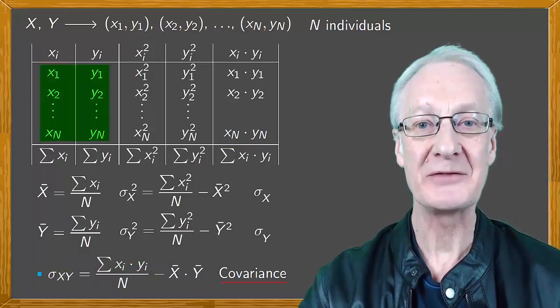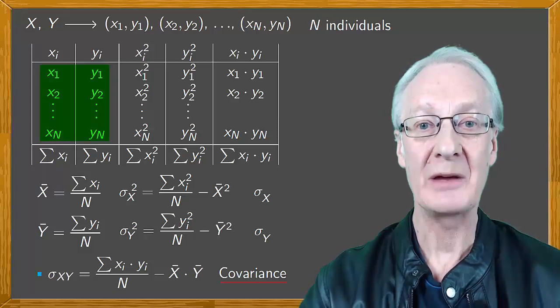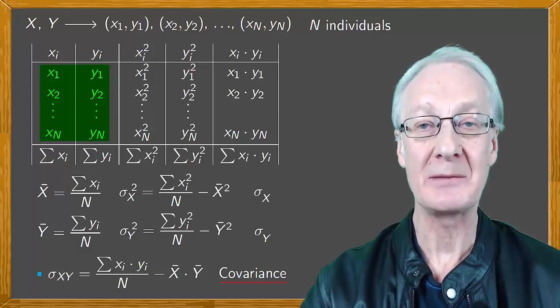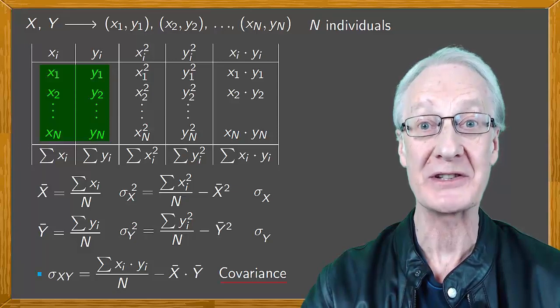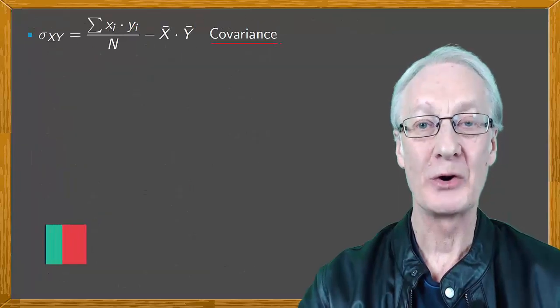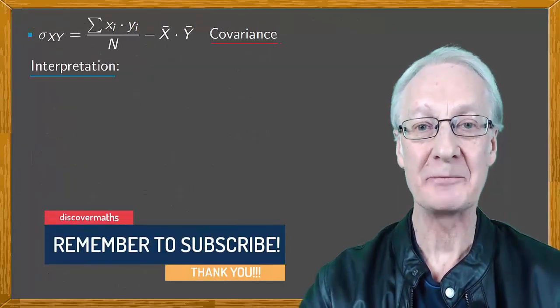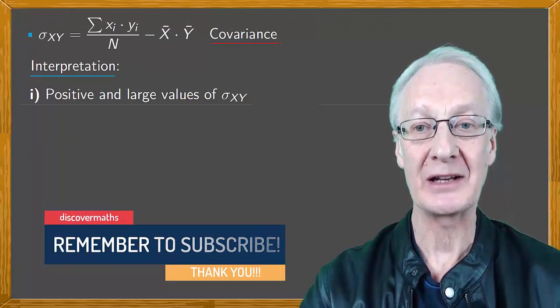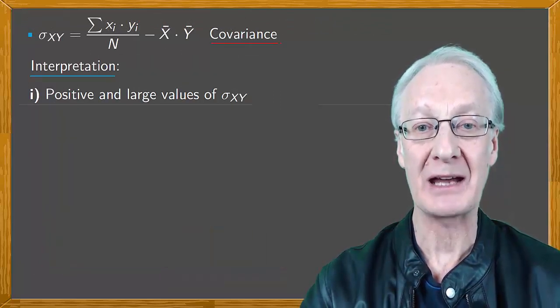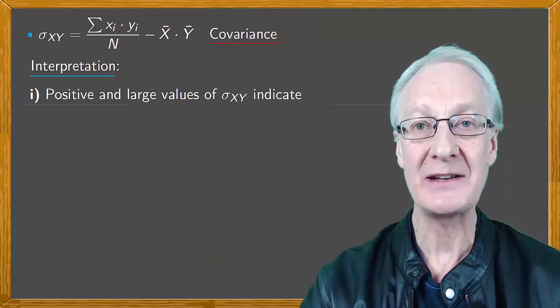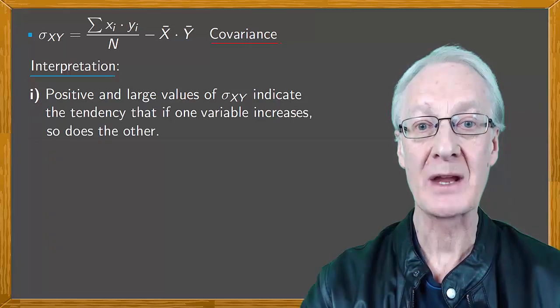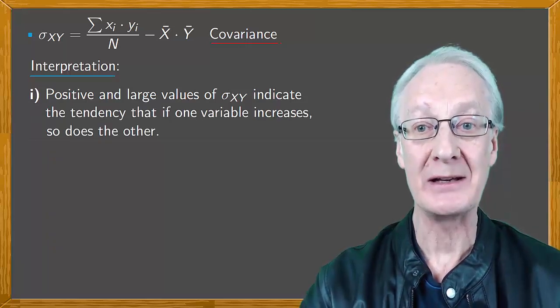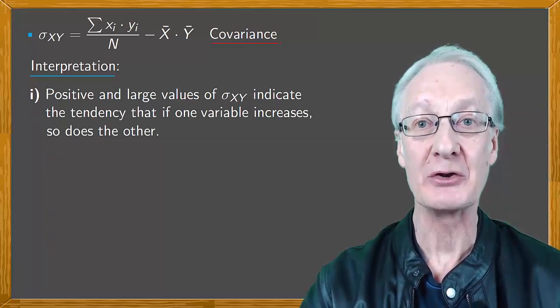If some data values occur more than once, then we must include them as many times as they appear. If they occur many times, then the way to do this would be to indicate the absolute frequencies. What is the covariance? What does it mean? First of all, positive and large values of the covariance sigma xy indicate the tendency that if one variable increases, so does the other. But remember, this is a trend and not necessarily true for all data.